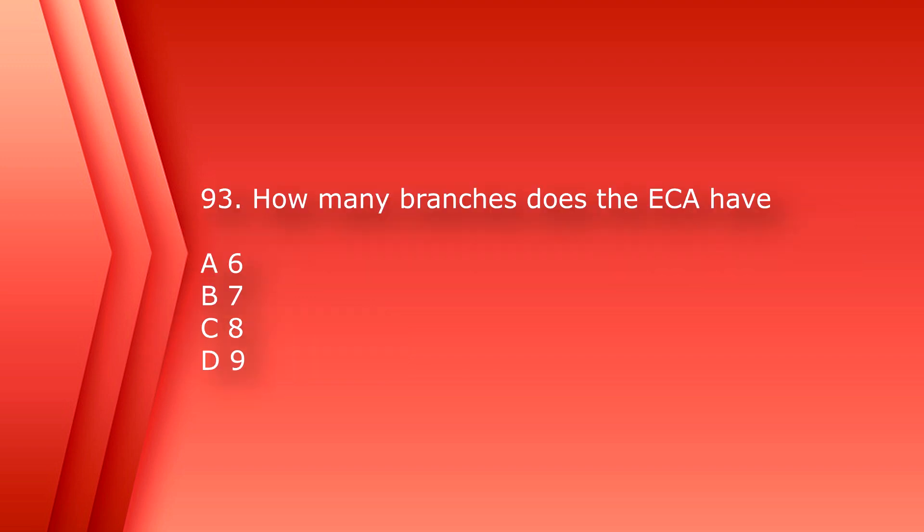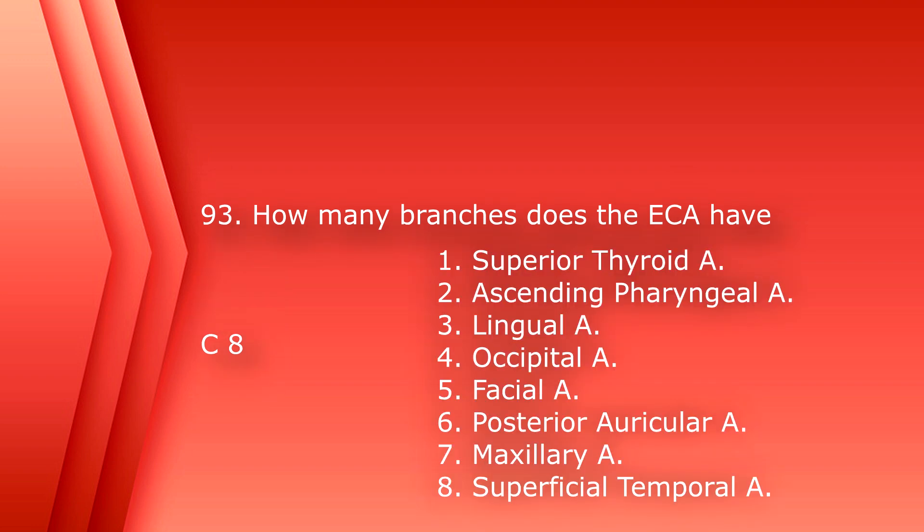Number 93: how many branches does the ECA have? A. Six. B. Seven. C. Eight. D. Nine. The answer is C. Eight.